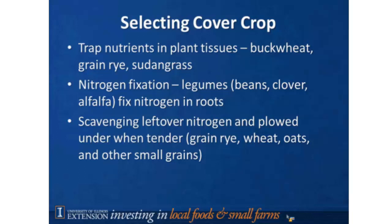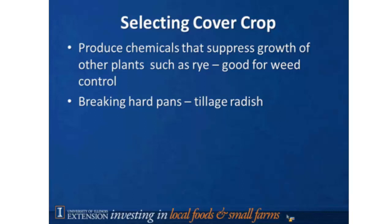Cover crops can also scavenge leftover nitrogen — and really not just nitrogen, but also potassium, phosphorus, and other nutrients. Nitrogen is the one we have the greatest concern about leaching into waterways in the U.S., but raising a cover crop in the fall and plowing it under can scavenge many different plant nutrients.